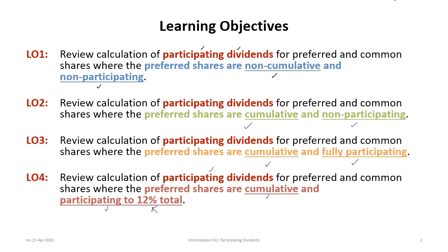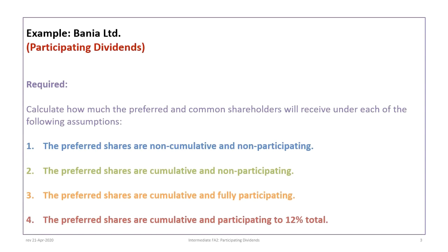This tutorial is based on the Banya Limited example, so please make sure you have downloaded and previewed it prior to proceeding. There are four requirements: calculating preferred and common share dividends under each of the following assumptions — non-cumulative and non-participating, cumulative and non-participating, cumulative and fully participating, and cumulative and participating to 12 percent.